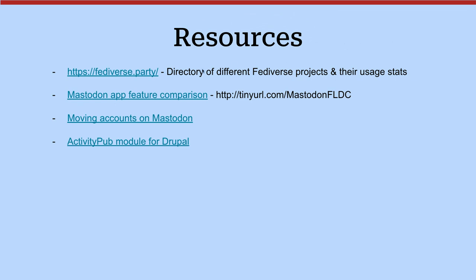These are just some resources. Fediverse.party shows you all the different types of projects out there — if you want to see all the different services, what they do, how widely they're used, how stable they are. It's more on the tech side of things, but it's a neat listing. A very kind person also put together a list of all of the Mastodon apps out there for iOS, Mac, PC, and everything — a Google Doc that tells you how much the apps cost, their features, and the operating system.